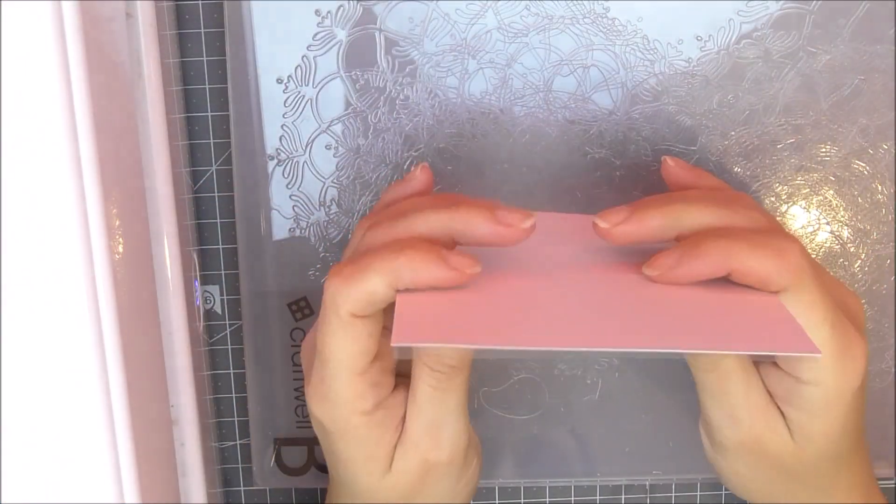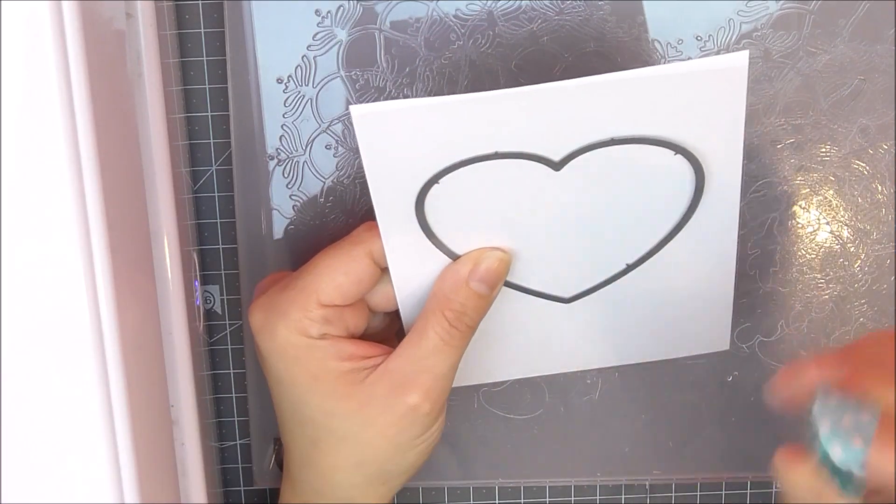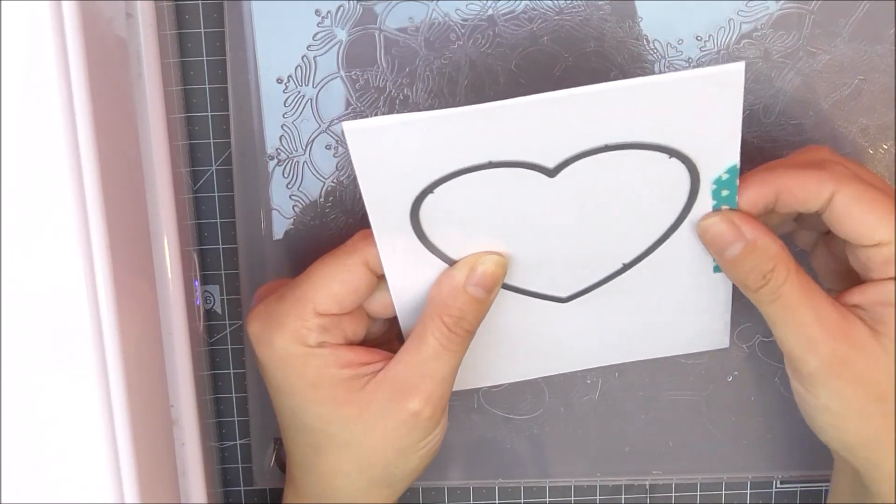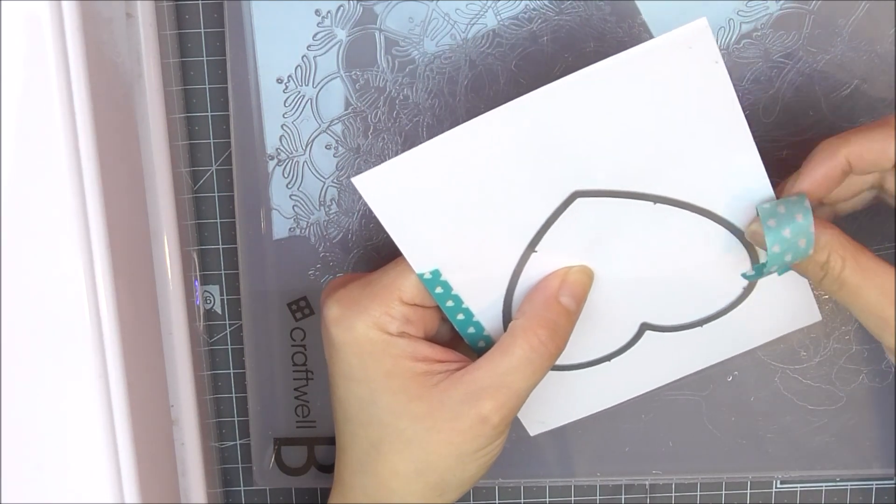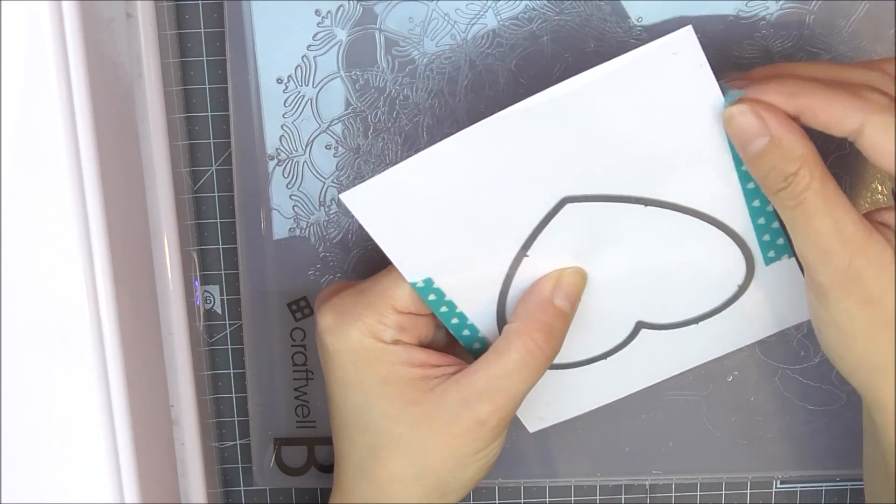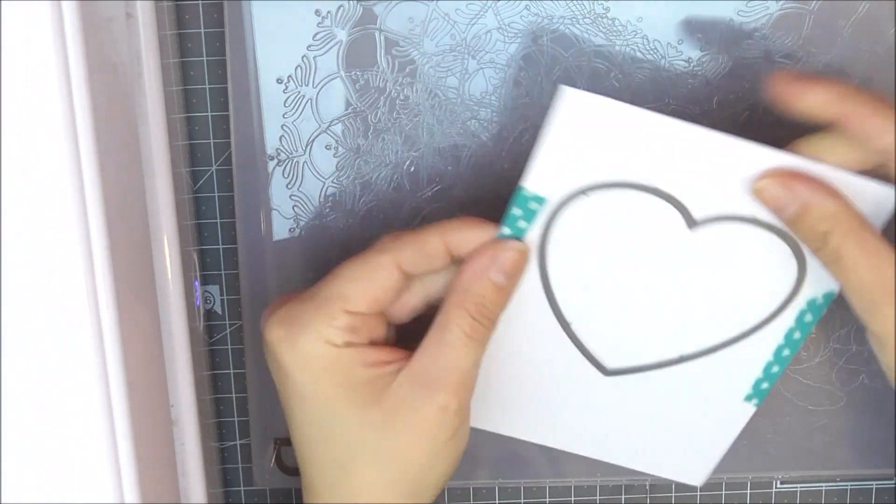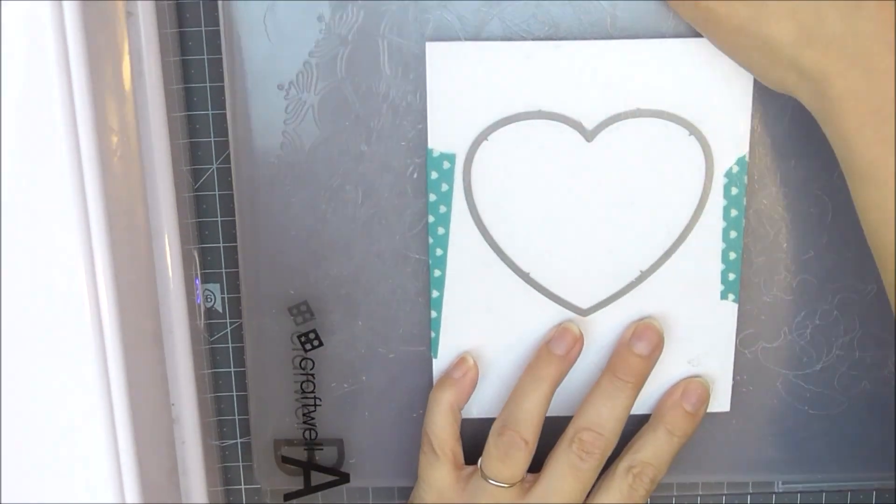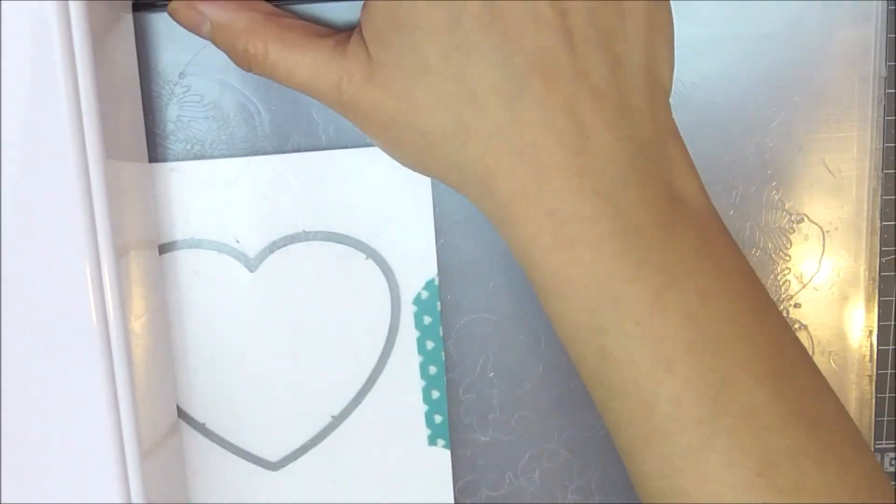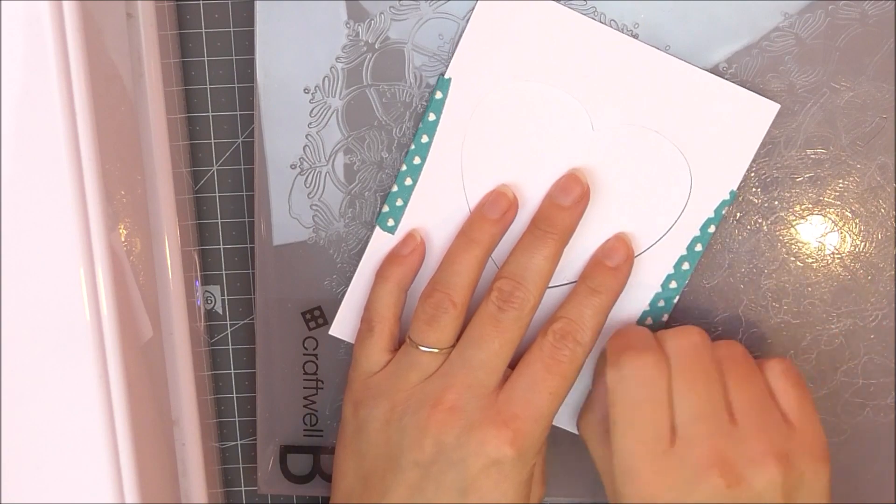I'm going to add a little bit of washi tape just to keep it in place so it doesn't move around and the windows are in exactly the same place on all of the pieces. Once I've got that in place, I'm just going to run this through my die cutting machine to create my beautiful little window in the front of my card panel.